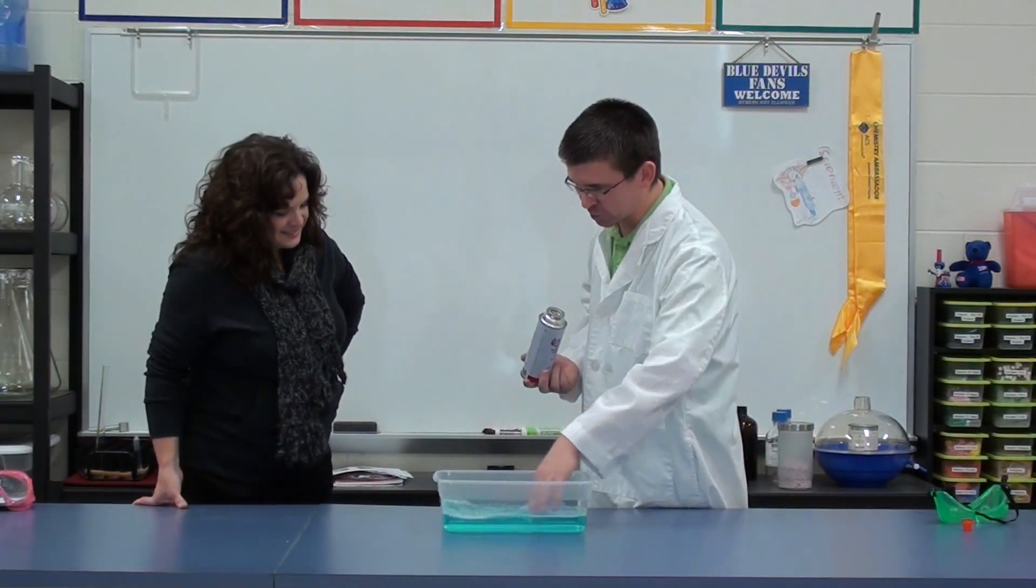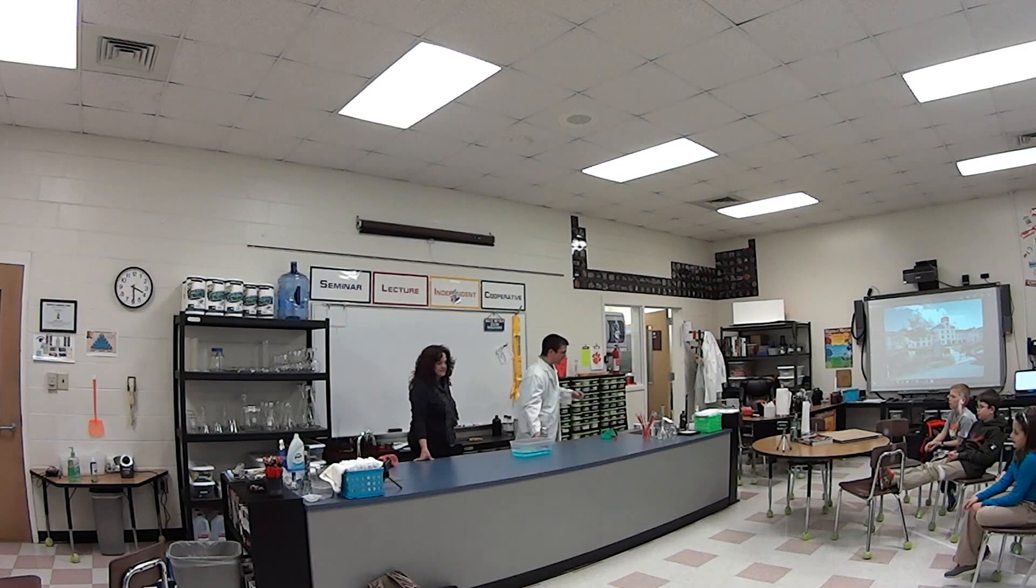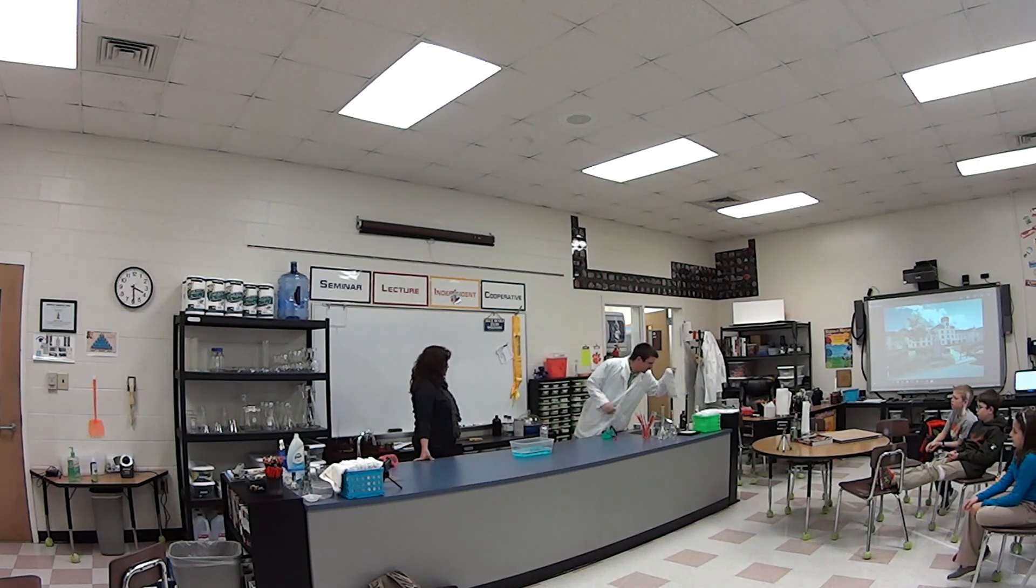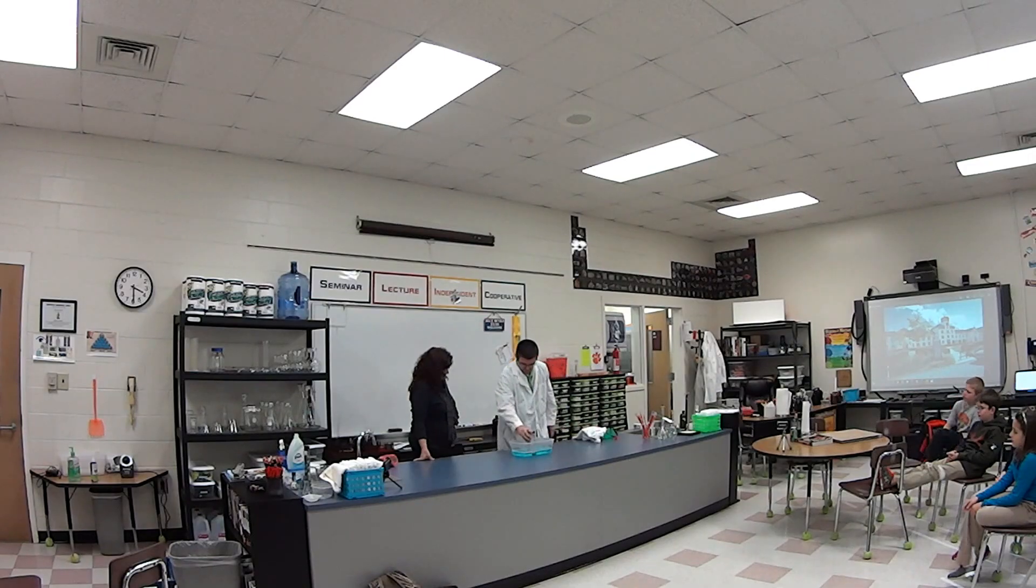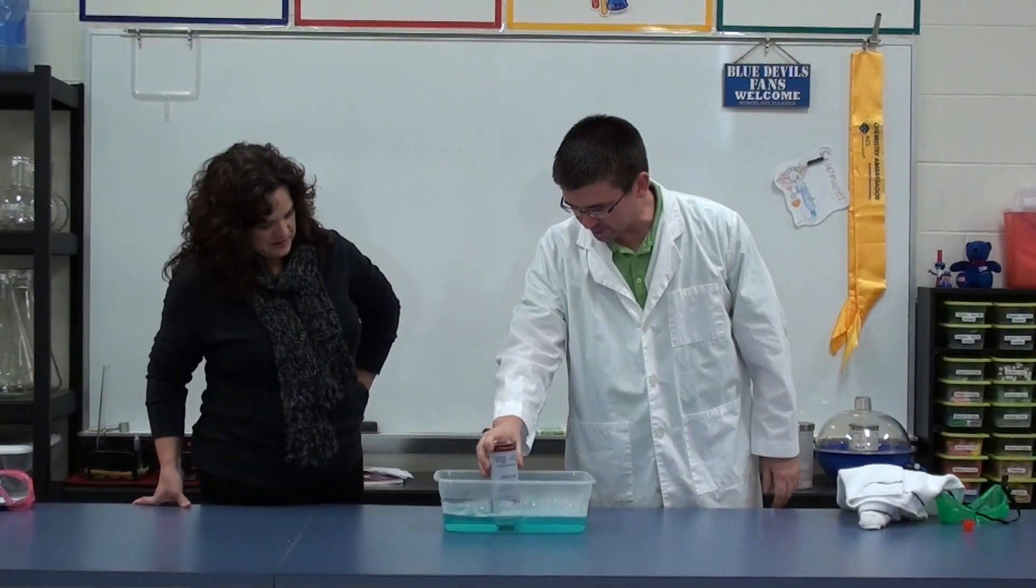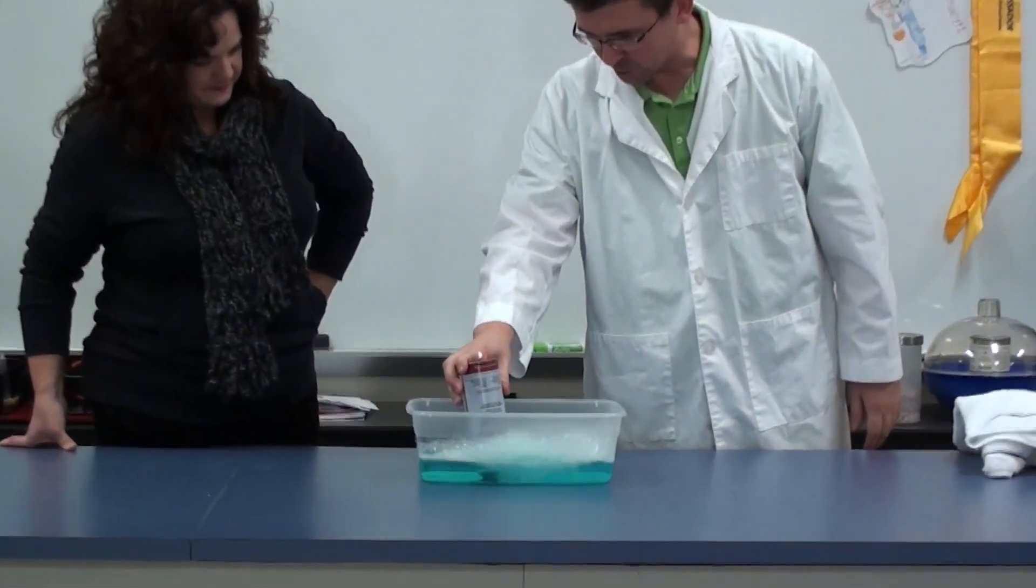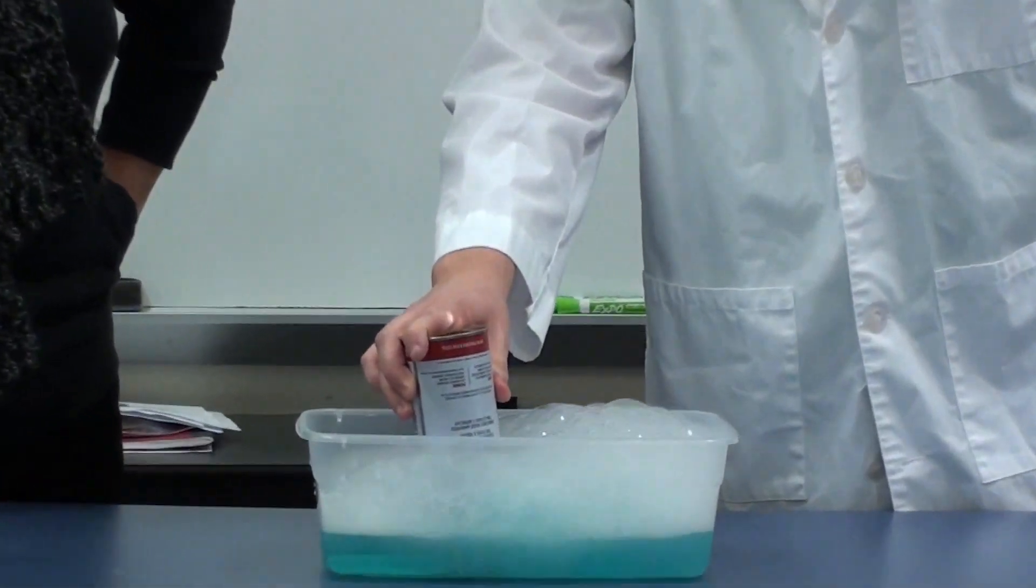This is just some dish detergent and some water, and let me grab a couple towels over here. All we need to do, this is compressed in the can, so when we put it down in there, it's going to make us some bubbles, so we're going to fill this up with butane bubbles.